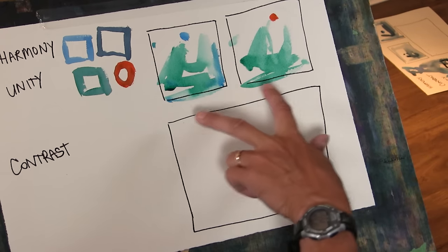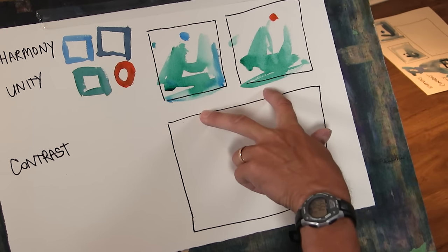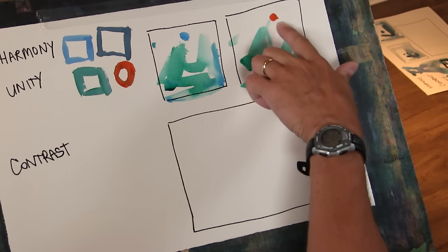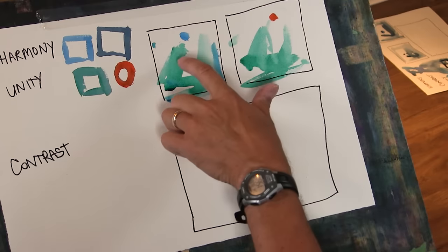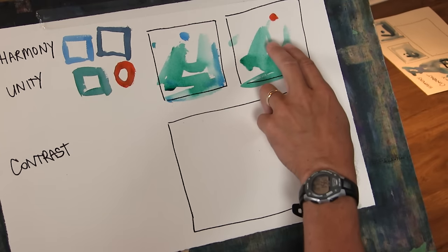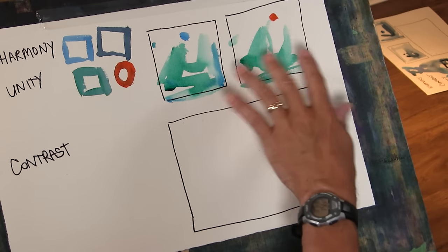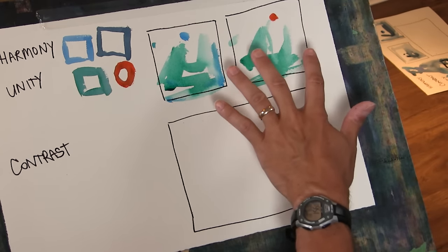So now when we just glance at these two compositions that are fairly similar, this is going to draw our eye more than this one because of the contrast from the orange to the bluish green which are near complements.